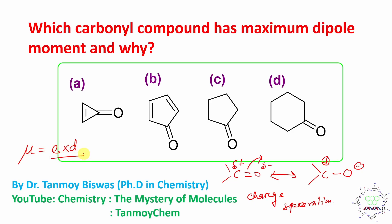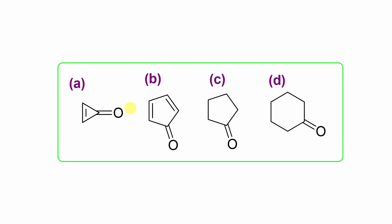Charge multiplied by distance. In this case, we need to prove that which compound has maximum dipole moment. Now, distance point of view, if you say, both are carbon-oxygen double bond. So actually, it is not that much different.